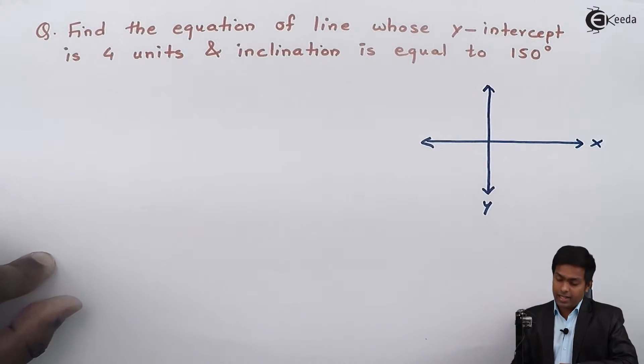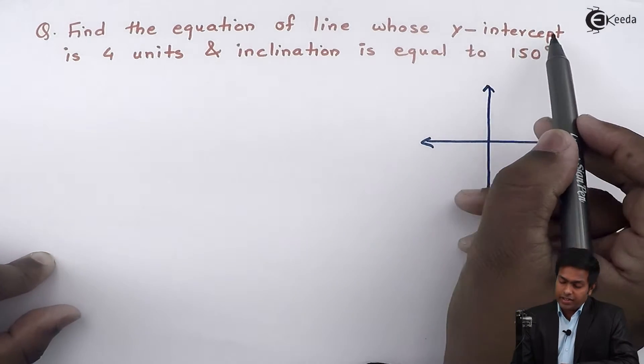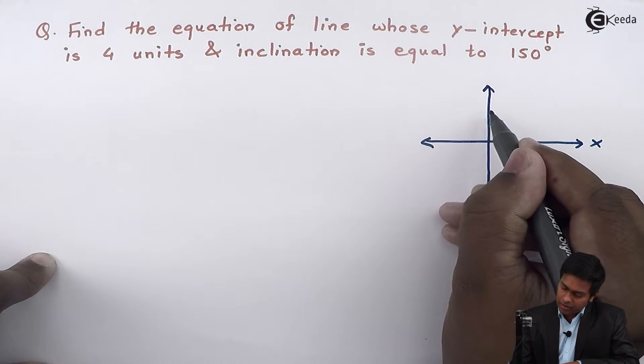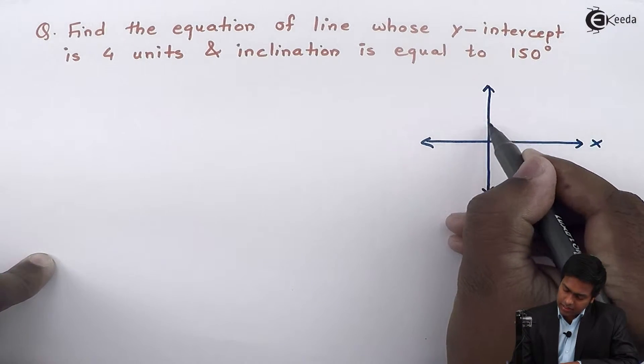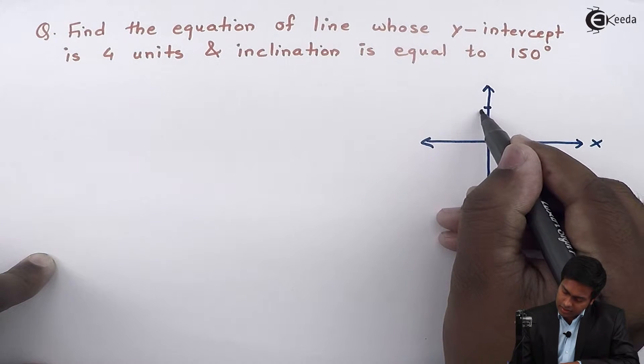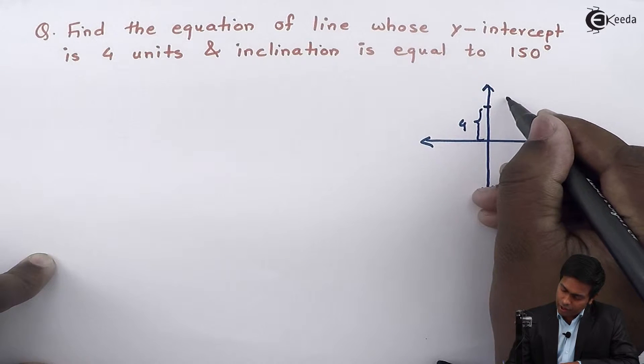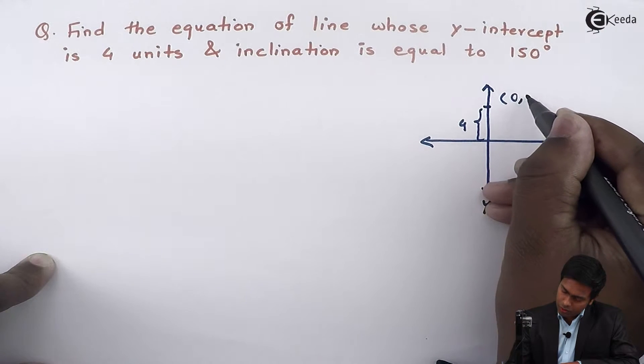Now as given, the y-intercept is 4 units. So the y-intercept is here and the distance is 4 units. So the coordinate of this point would be (0, 4).